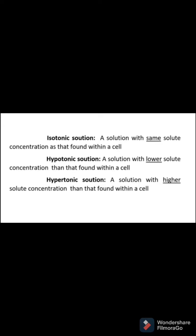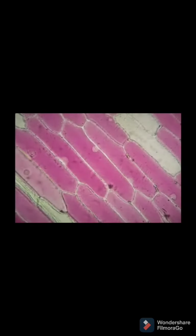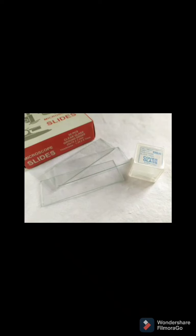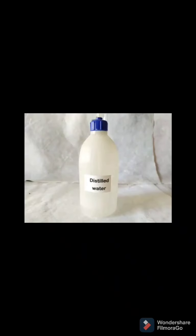Now let's look at an experiment discussing tonicity using the epidermis of an onion cell. The materials needed are: onion, distilled water, glycerin, sugar solution, needles, dropper, microscope, and filter paper.